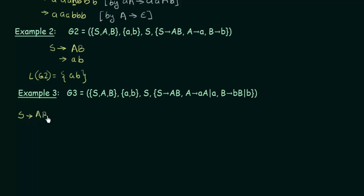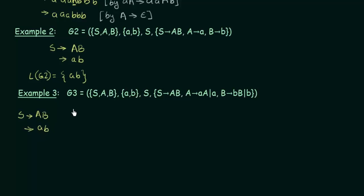Let's see how we can expand AB further. Going to A first: A gives small a. And for B, B gives small b. So one string that can be formed from grammar G3 is ab. Now let us see another string. Starting with the start symbol again: S gives AB.